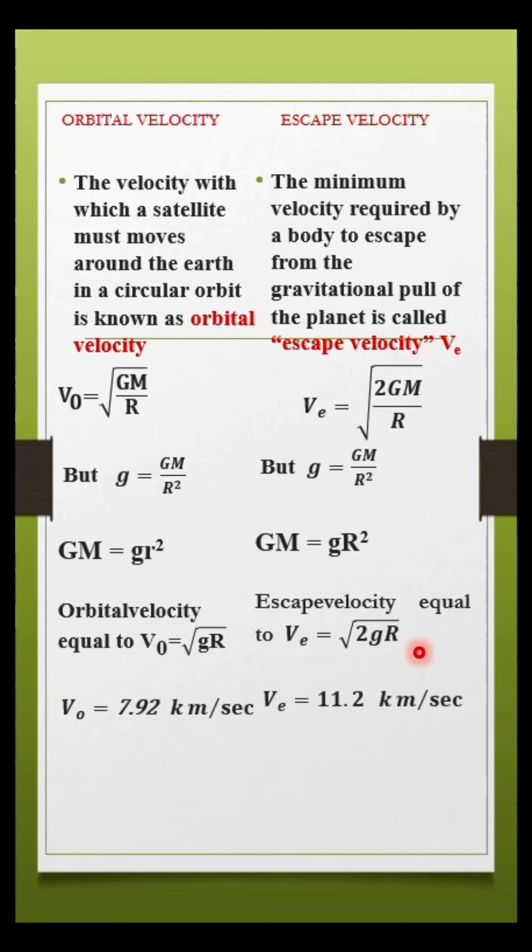From this we can understand that if a body or object should revolve, it requires 7.92 km/sec, but to escape from the surface of the Earth, it requires 11.2 km/sec.